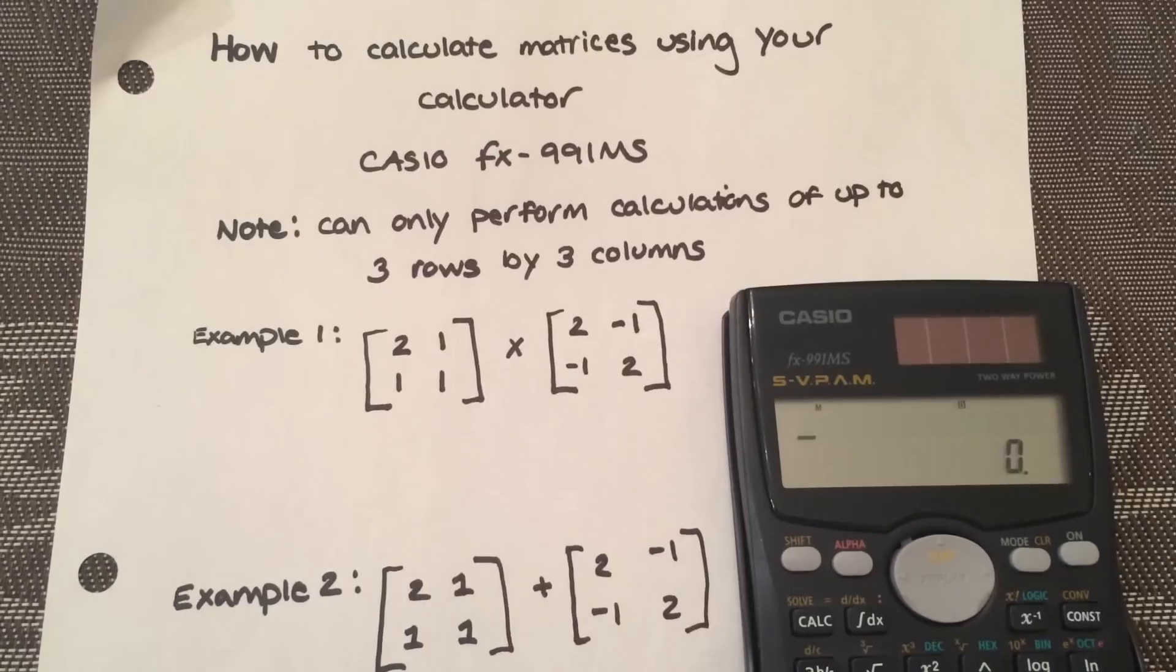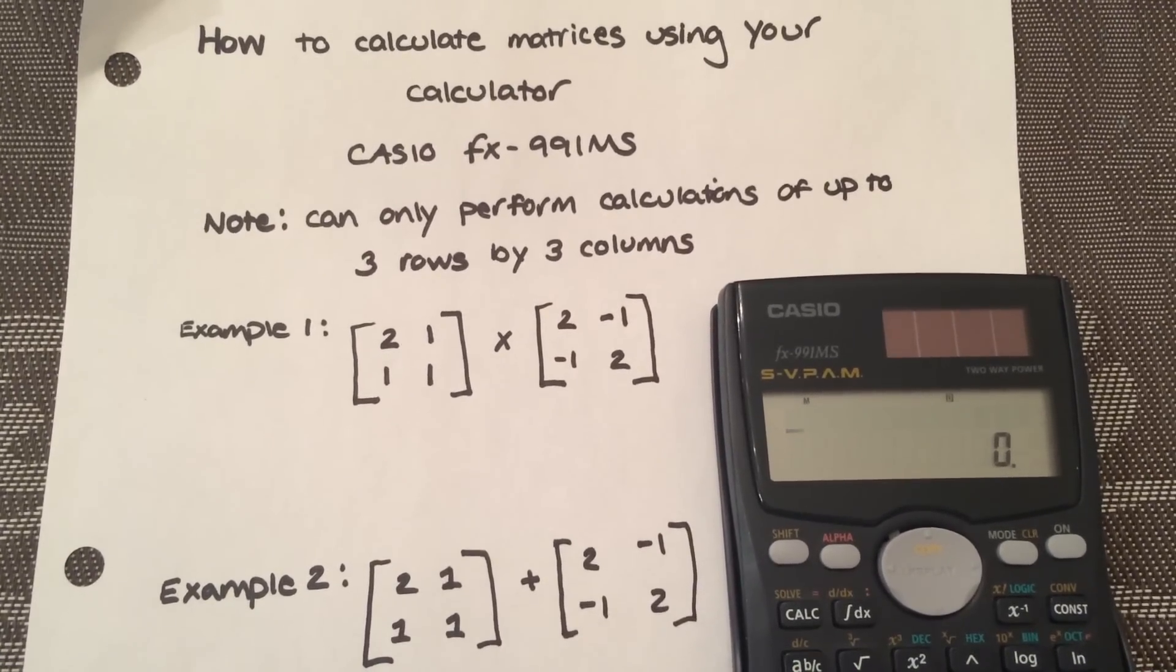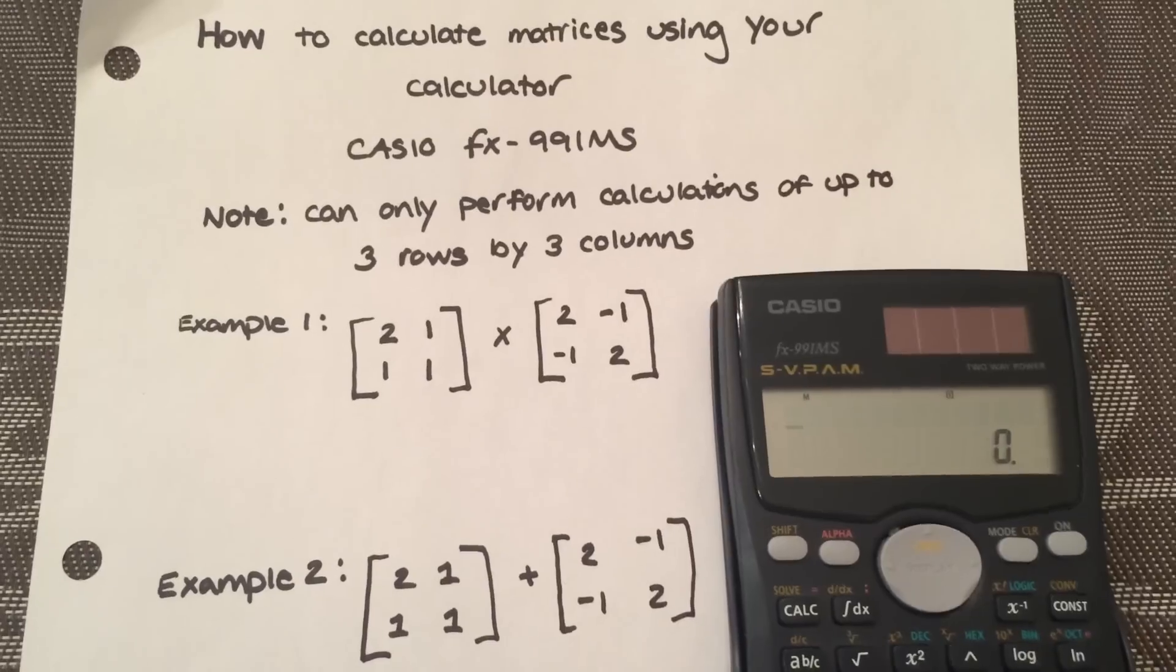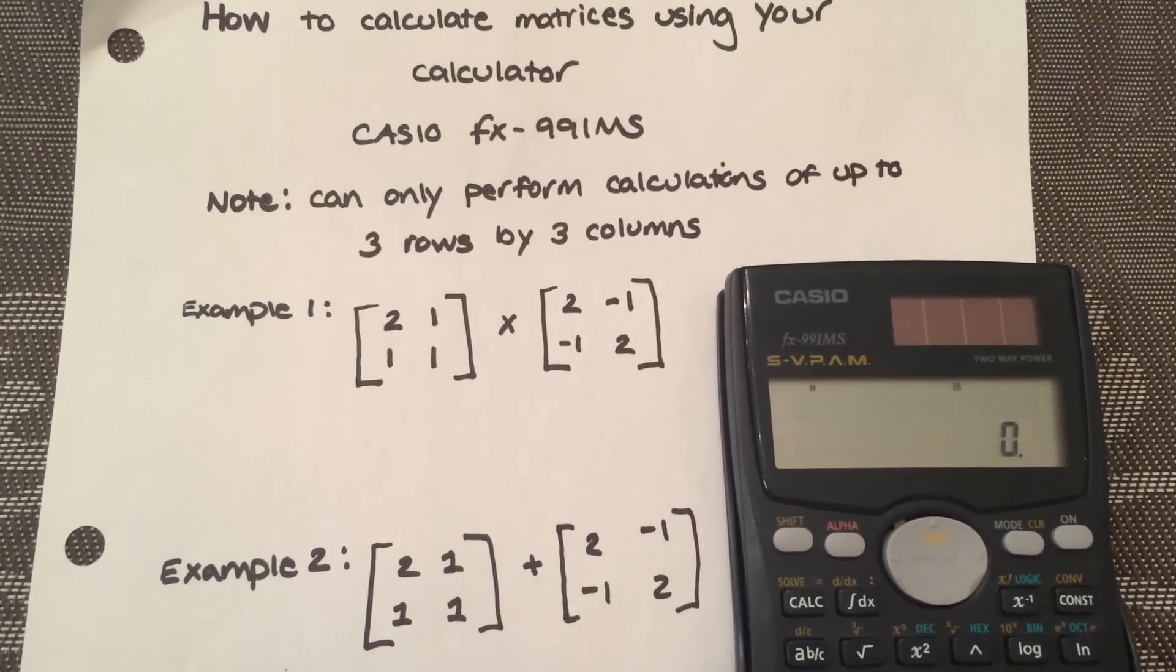In this video, I'm going to show you how to calculate matrices using your Casio FX991MS calculator. Note, you can only perform calculations up to 3 rows by 3 columns.